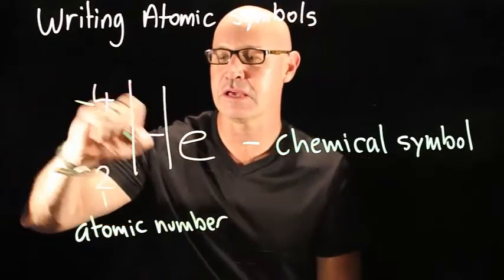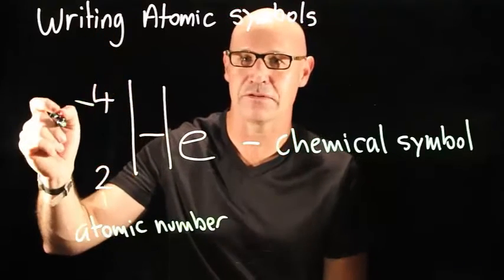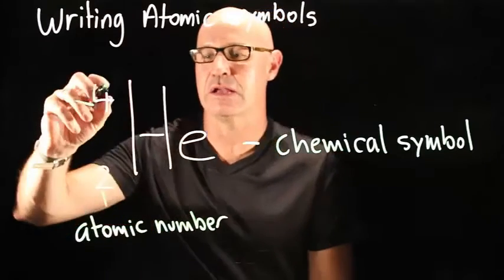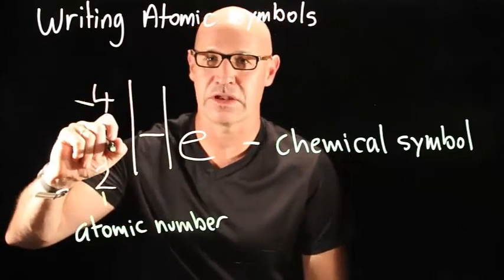And up here, we've got our atomic mass, or otherwise known as the mass number. And that's the number of protons plus the number of neutrons.